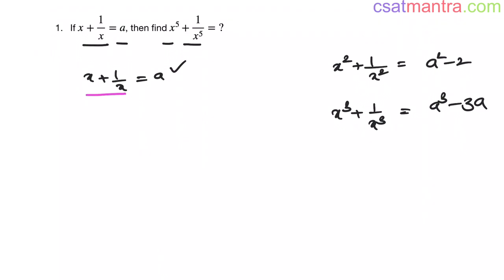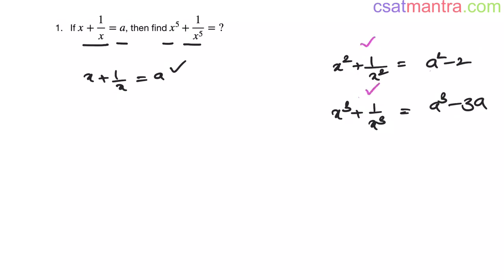So whenever x plus 1 by x is given, we can find x square plus 1 by x square as a square minus 2, and x cube plus 1 by x cube as a cube minus 3a. You can remember these formulas and directly substitute the value of a given in the problem — for example, a equals 2 or 3. Having known these two values, we can find x power 5 plus 1 by x power 5 by multiplying these two expressions.